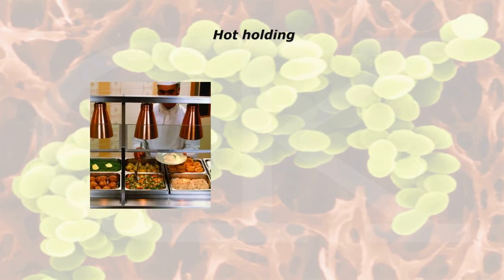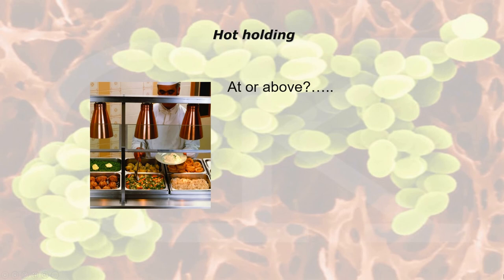For hot holding — for example using a bain marie — you have gantry infrared lights providing top heat and trays on a dry or wet heater providing heat from underneath. The hot holding temperature should be above 63 degrees Celsius.